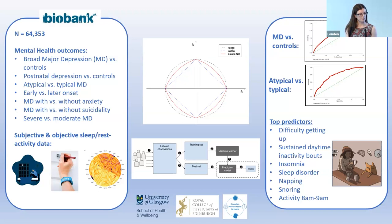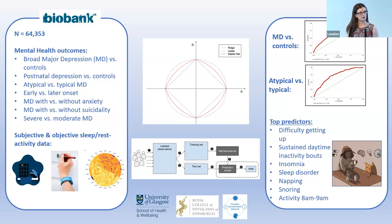The most important takeaway across all the models was that the top predictors showed a great deal of overlap. In most models, the most important predictors were subjective reports of difficulty getting up in the morning, insomnia, napping and being told they snore, and from actigraphy, sustained bouts of inactivity during the day and lower morning-time activity around 8am. While we may need more fine-grained data to improve prediction performance, we've identified a set of features which could theoretically serve as markers of risk of depression and of more severe outcomes.